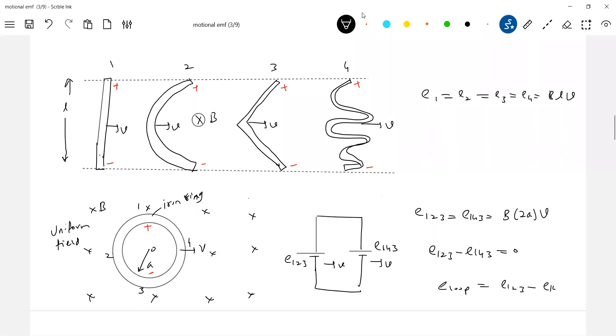Therefore what is the EMF induced in the loop? E123 minus zero. If the ring is having some resistance R, let's assume here half of the resistance R by 2, R by 2. What is the current in the ring? Will be zero. No current flows.